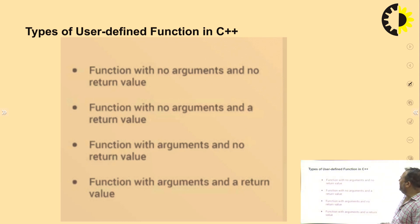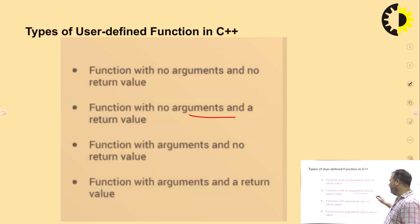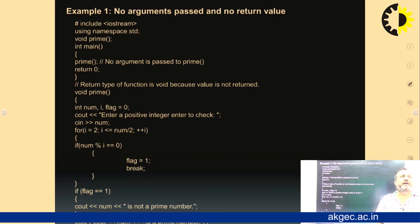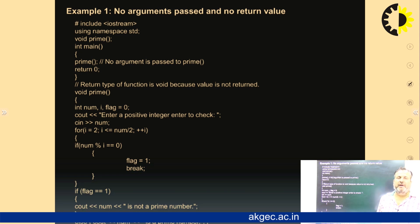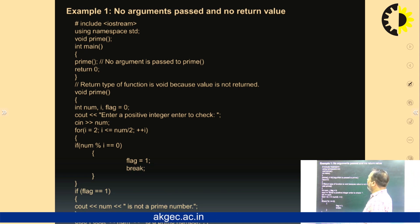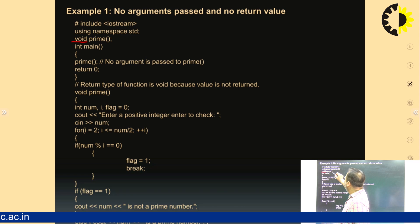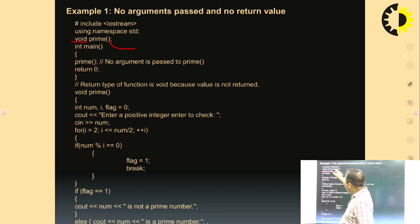These are some kinds of user-defined functions: function with no argument and no return value, function with no argument and return value, function with argument and no return value, and function with argument and a return value. These are the different natures of functions. No argument passed and no return value — for example, we make the return type void, meaning the function is not returning anything, and no argument is passed inside the prototype declaration.